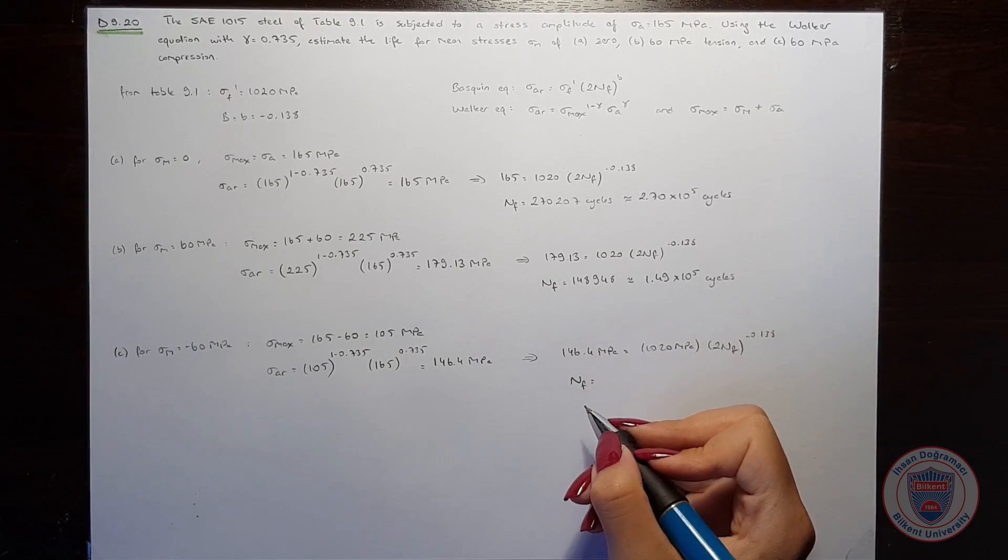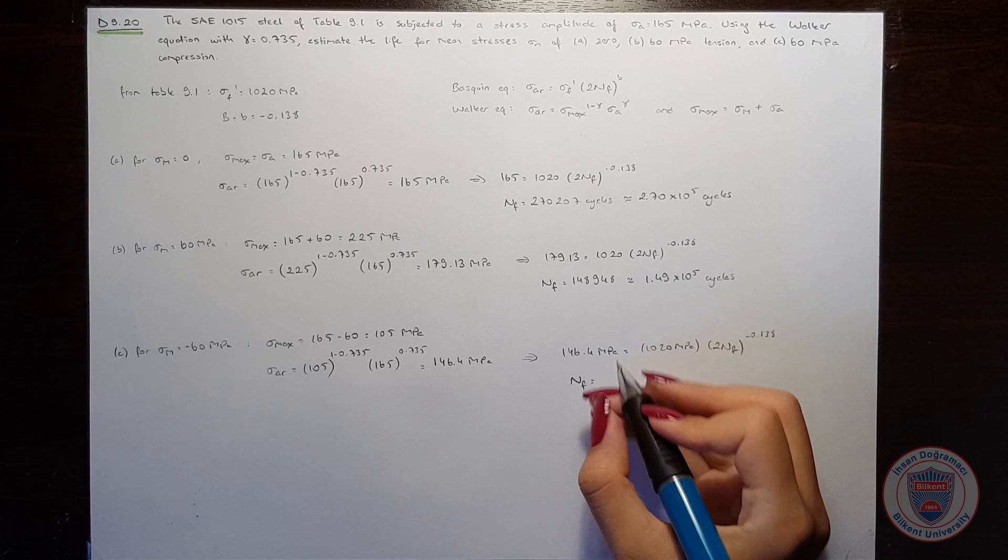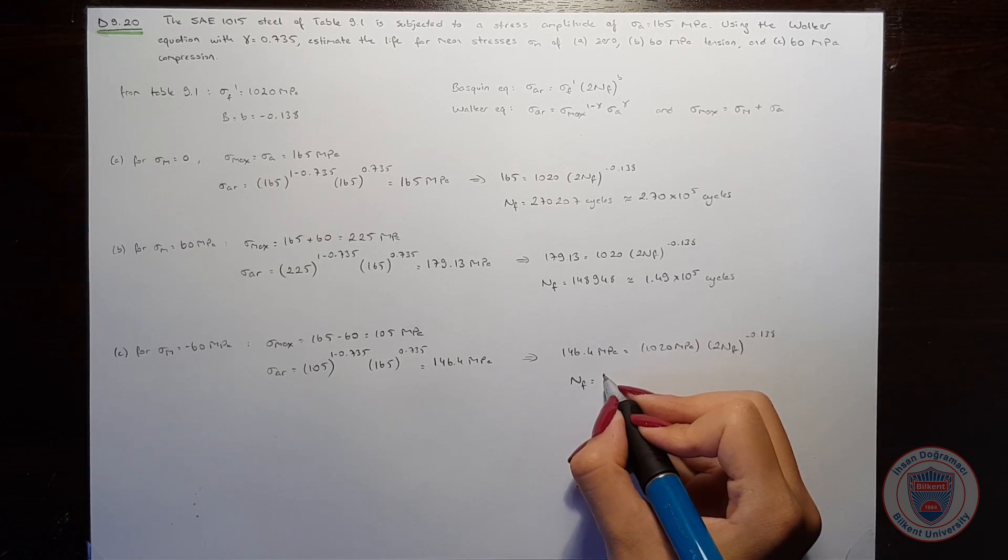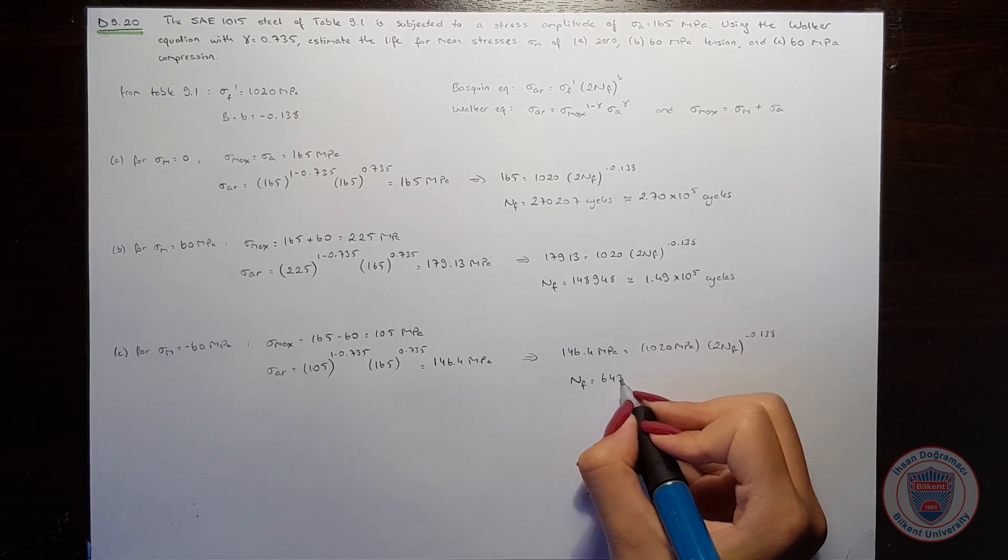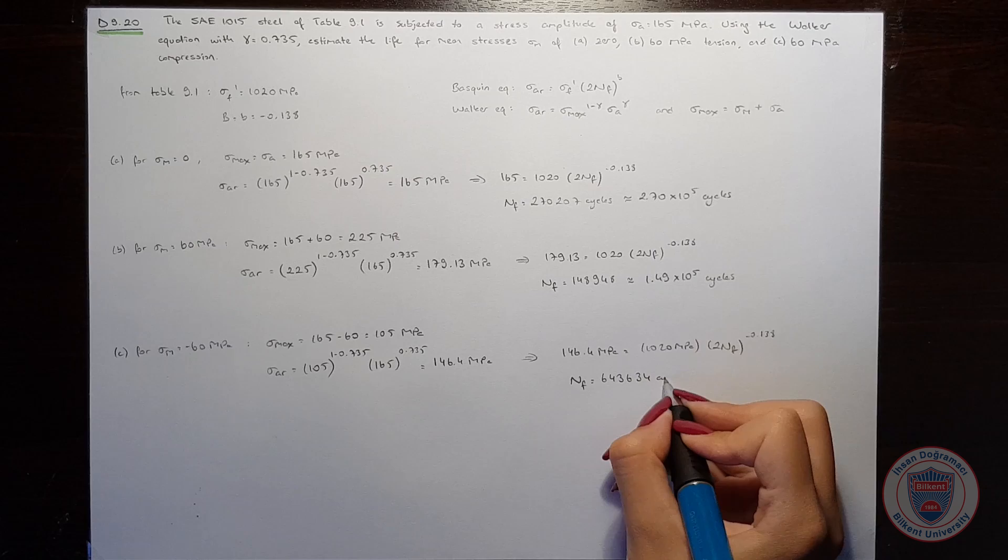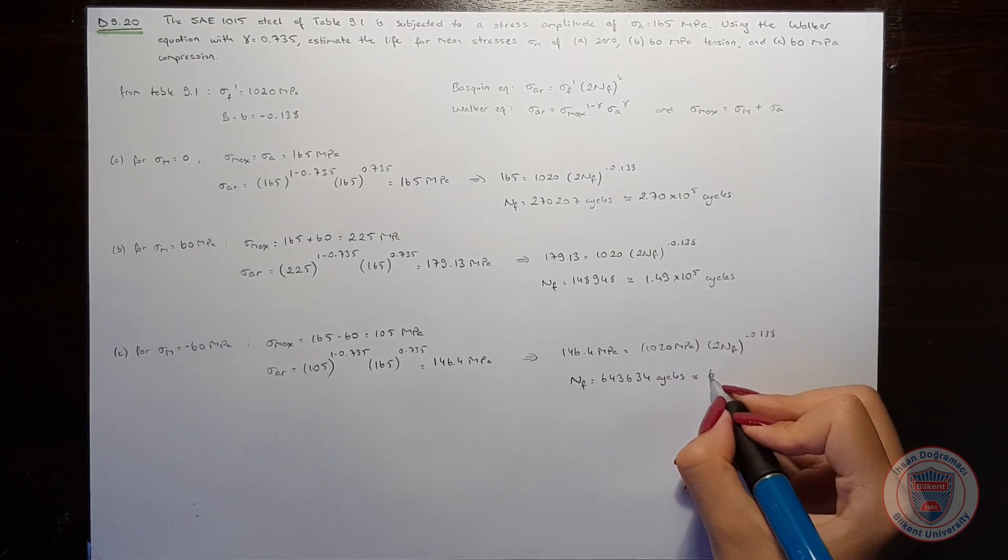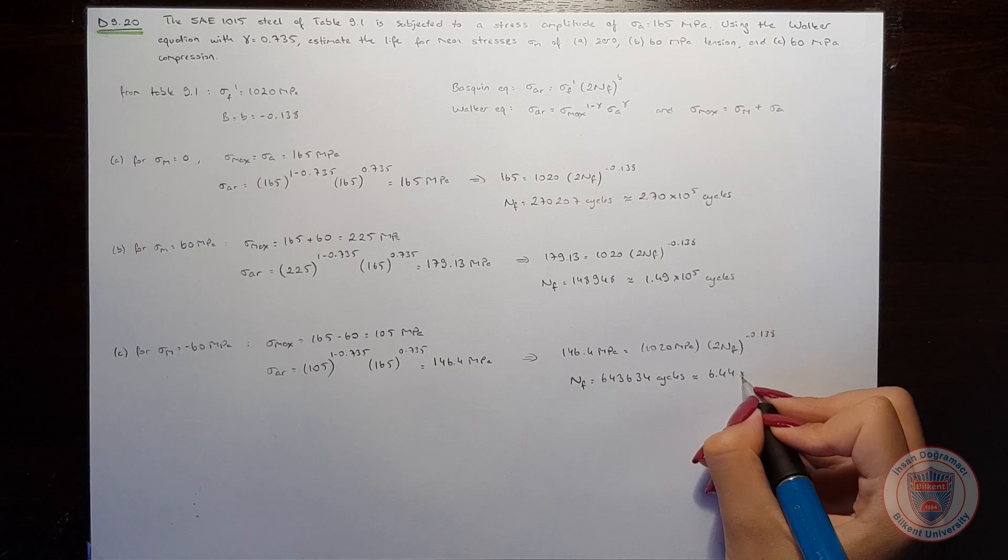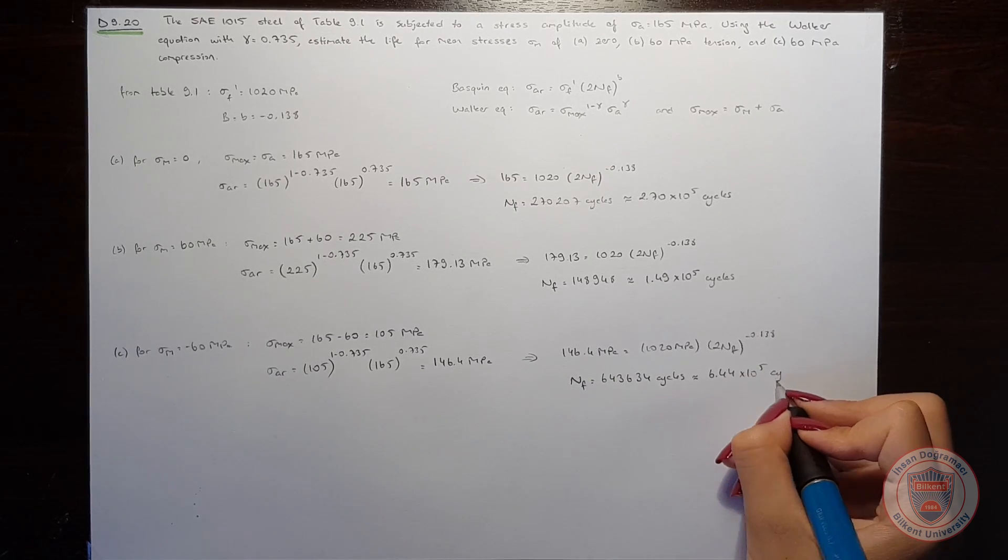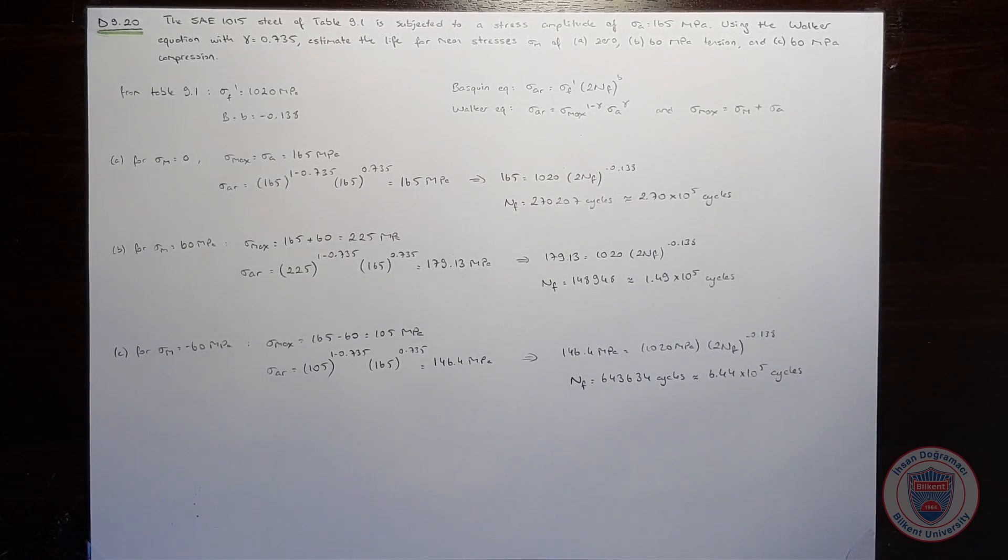The number of cycles becomes approximately 6.44 times 10 to the power of 5 cycles.